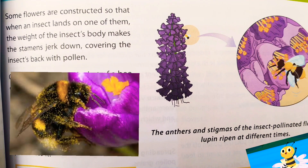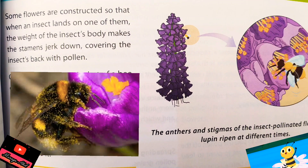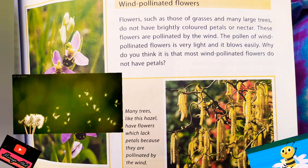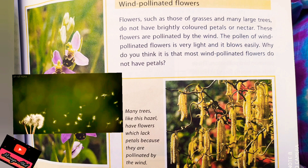Flowers are very beautiful but they're genius too. Some flowers are constructed so that when an insect lands on them, the weight of the insect's body makes the stem jerk down, covering the insect's back with pollen. One interesting case is a flower that looks like a female bumblebee. When a male bumblebee sees the flower, he tries to mate with it, gets trapped, and transfers pollen to other flowers. Quite a clever tactic!